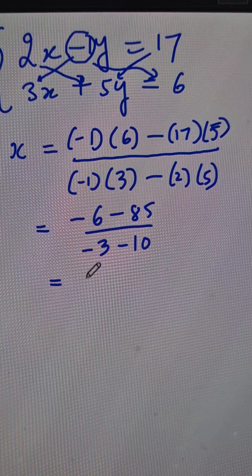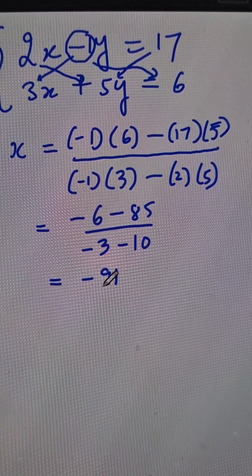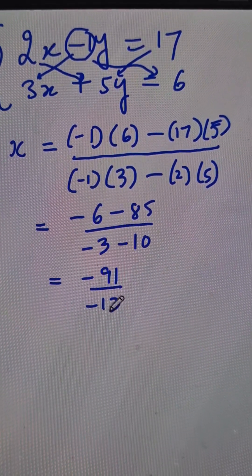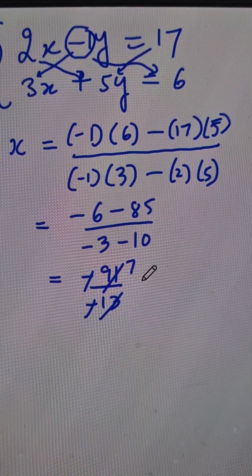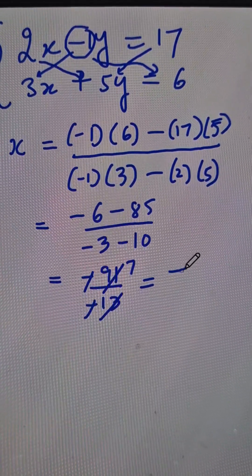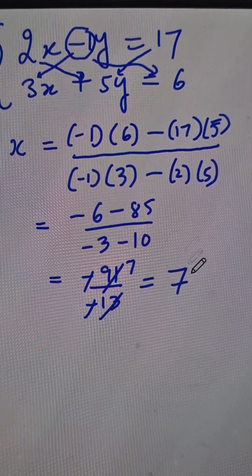So, this comes out to be negative 91 over negative 13. So, the negatives cancel out and 13 cancels 91 exactly 7 times, giving you x as 7, and that's the exact value of x we wanted.